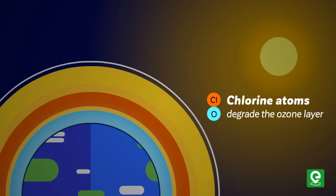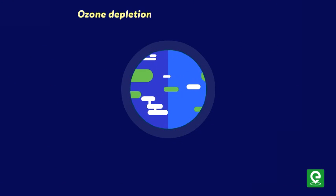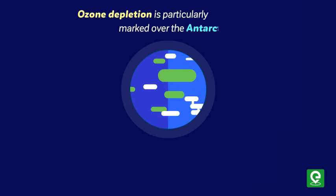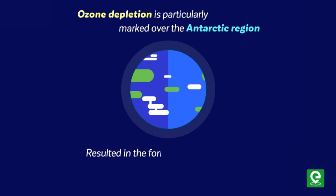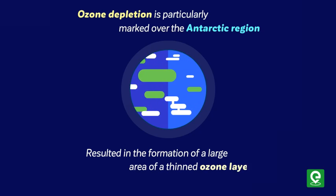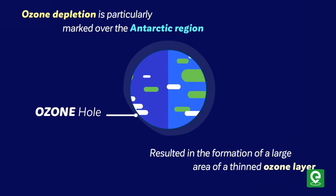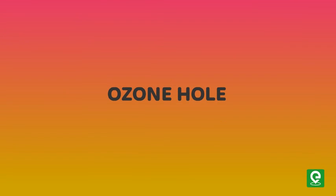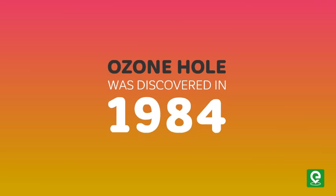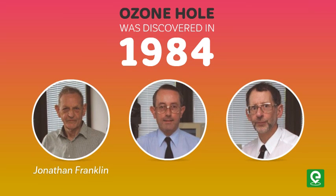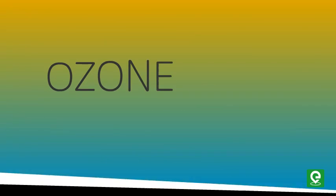Ozone depletion is particularly marked over the Antarctic region, which has resulted in the formation of a large area of a thinned ozone layer commonly known as the ozone hole. The ozone hole was discovered in the year 1984 by Jonathan Franklin, Joseph Farman, and Brian Gardiner.